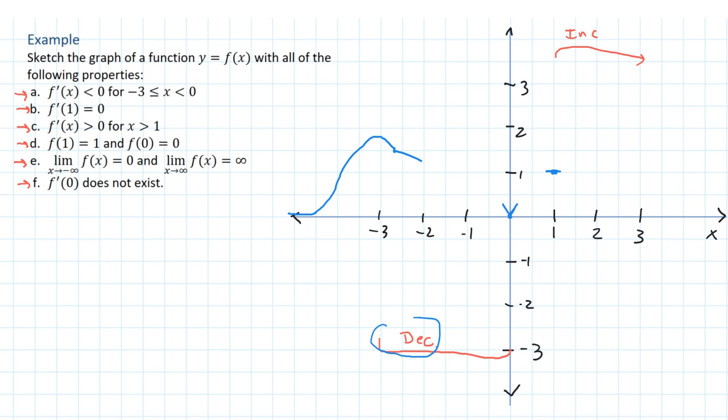So then it's going to match up with this corner point. Then it's going to pick up and it's going to flatten out a touch. And then it's just going to be continually increasing forever because the derivative is positive for x greater than 1.